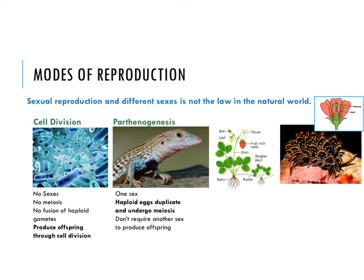Another method that doesn't require sex at all is called parthenogenesis. Parthenogenic organisms seem to have evolved from sexual organisms, so it's a loss of sex that leads to parthenogenesis. The species is all made up of one sex, and they still produce gametes — haploid eggs — which then duplicate and undergo meiosis within one organism. So they're basically self-fertilizing; it doesn't require another sex to produce offspring.